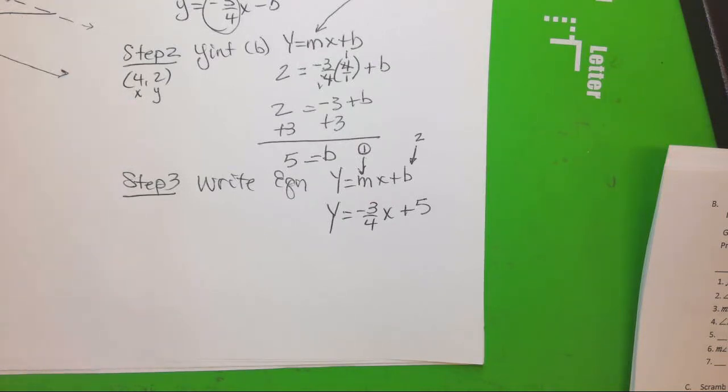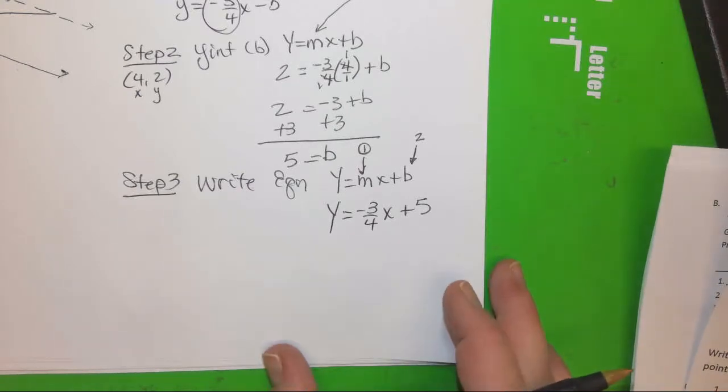Okay. Now, we didn't have to work too terribly hard for our slope. We could just look at it and find it. The next one we're going to do is a perpendicular. And we're going to work a little harder for that. So I think we're going to go to the bottom of page two, the number three. Let's do that one.